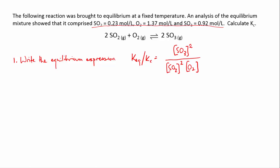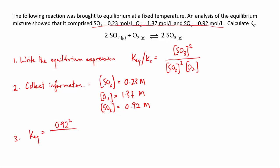Now we're given some information about the concentrations of our three species, so the next important thing to do would be to collect the information that you know. And then for this problem all we have to do is substitute those values into our equilibrium expression to determine the value of Keq. And if you plug that into your calculator, you will find you should get 11.7.